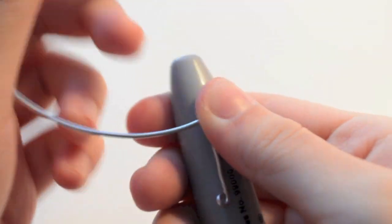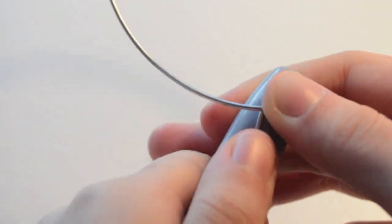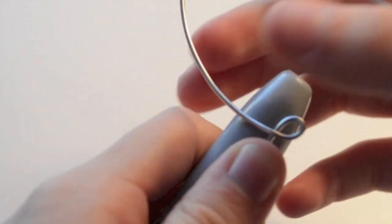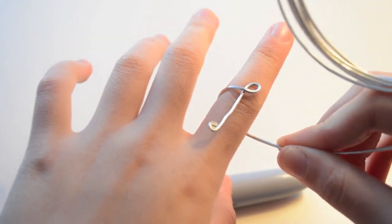Now wrap the wire around the marker and make sure it is customized to your own finger. You should check if the ring fits in between each step.